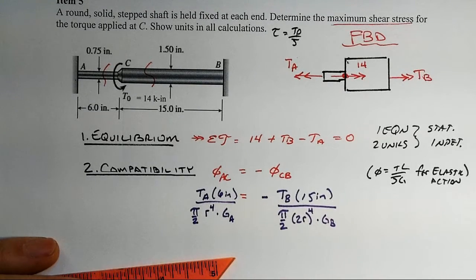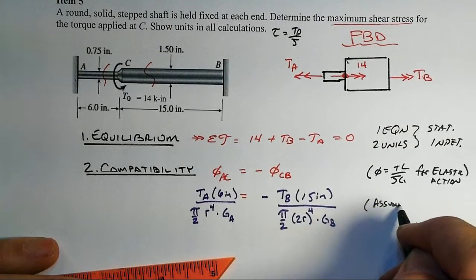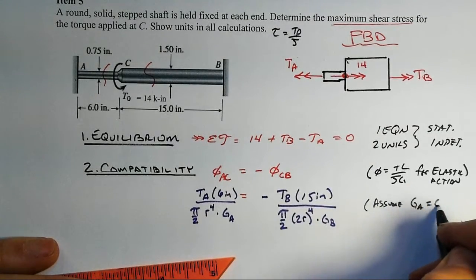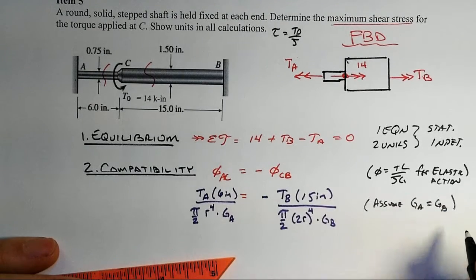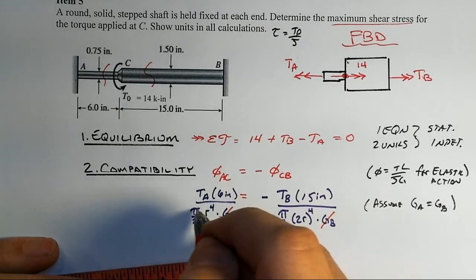Now, we don't have much choice here but to go ahead and assume that we have constant material. We weren't told. It kind of looks like we do, but who knows? And so we have to assume something, and this is a reasonable assumption.